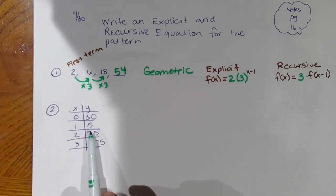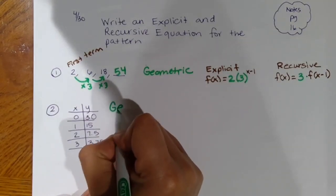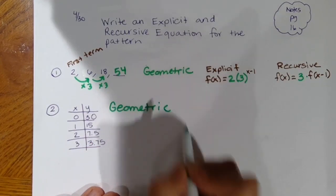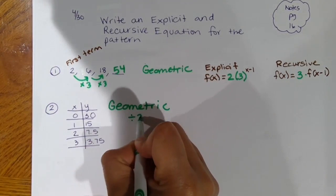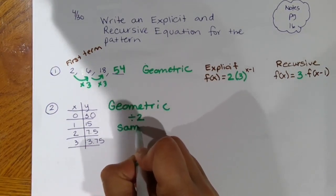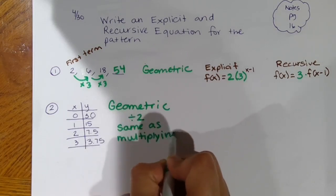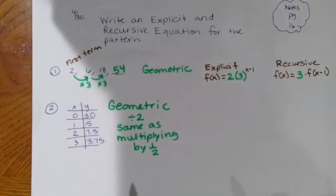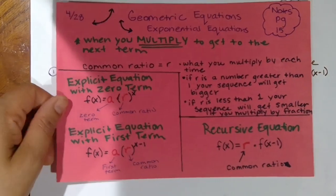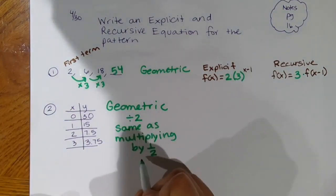What's the relationship between 30 and 15? Well, 15 is half of 30, and 7.5 is half of 15, so you're dividing by 2 every time. With a geometric equation, you can't say you're dividing — it's always multiplying. Dividing by 2 is the same as multiplying by one-half, so r equals one-half.